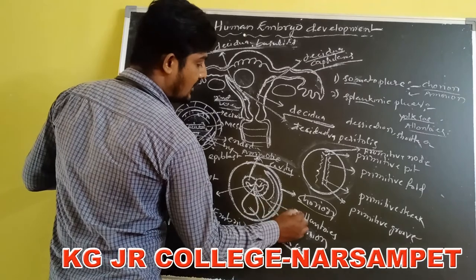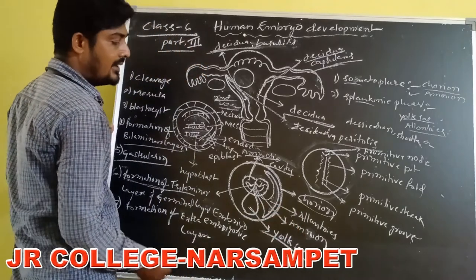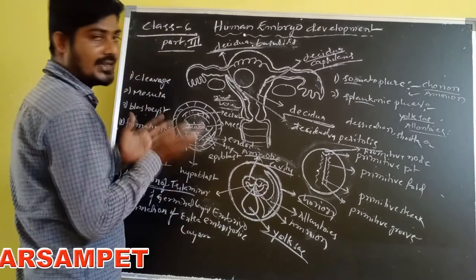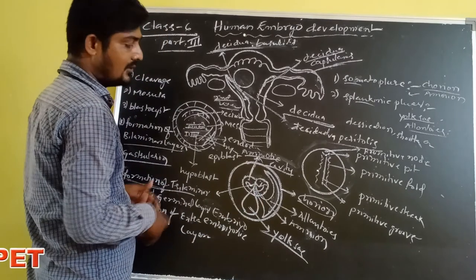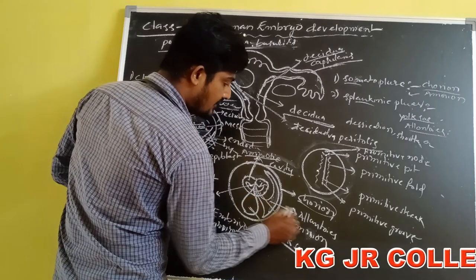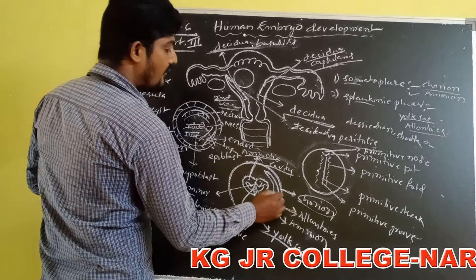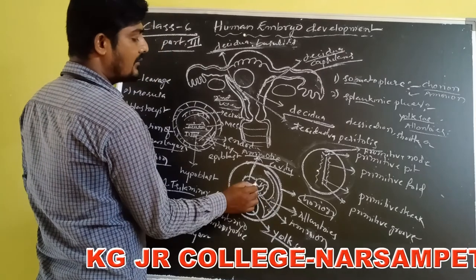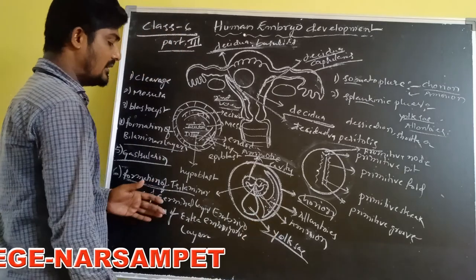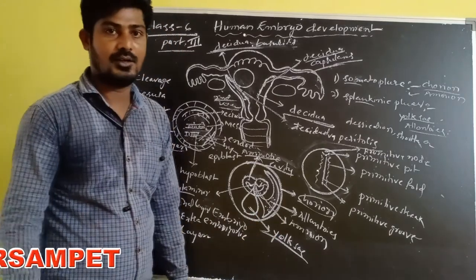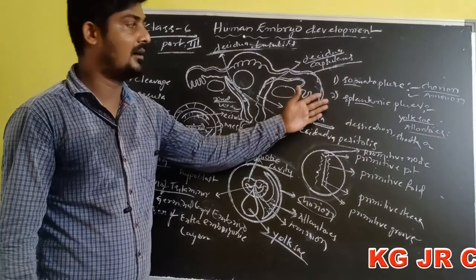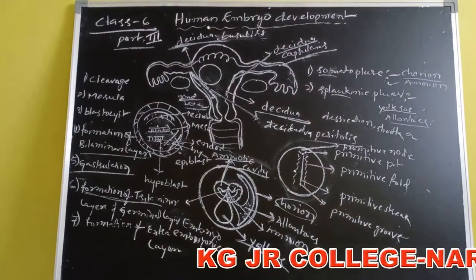The allantois also forms from the evagination of the gut of the embryo. Evagination means the extending of the gut during embryonic development. The function of the allantois is to store waste material released from the embryo. So these are the four extra-embryonic membranes: allantois, yolk sac, amnion, chorion — in sequence.